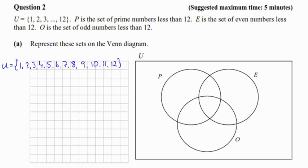Question 2. U is the universal set, 1, 2, 3 and all the way up to 12. P is the set of prime numbers less than 12. E is the set of even numbers less than 12. And O is the set of odd numbers less than 12. Part A, represent these sets on a Venn diagram.